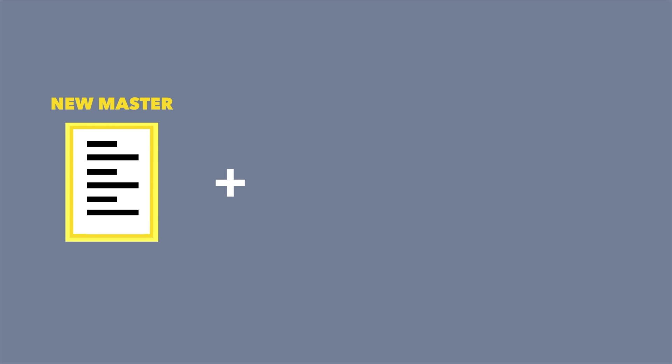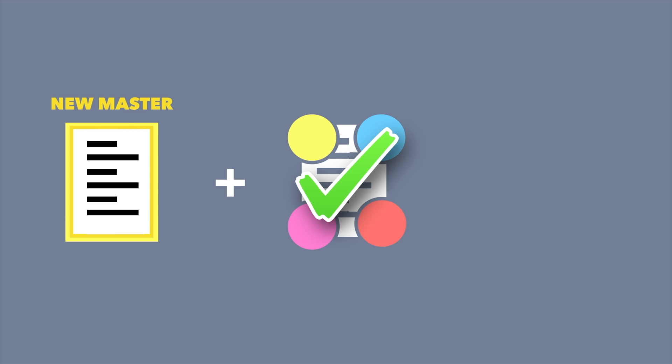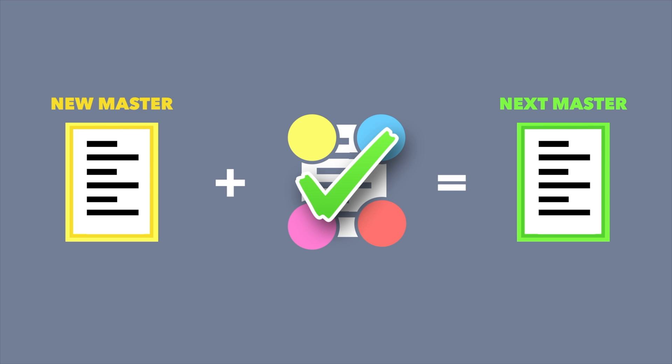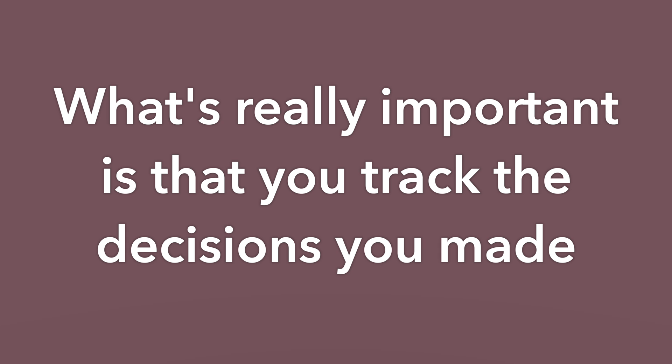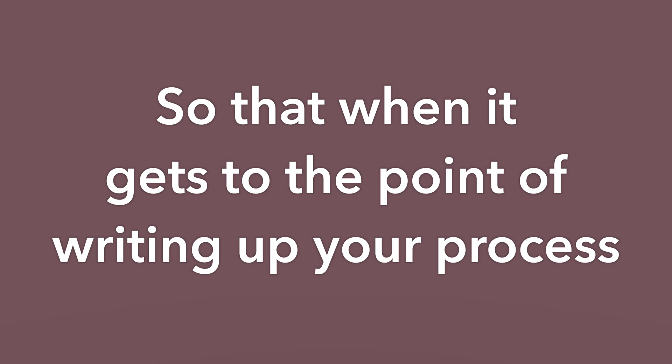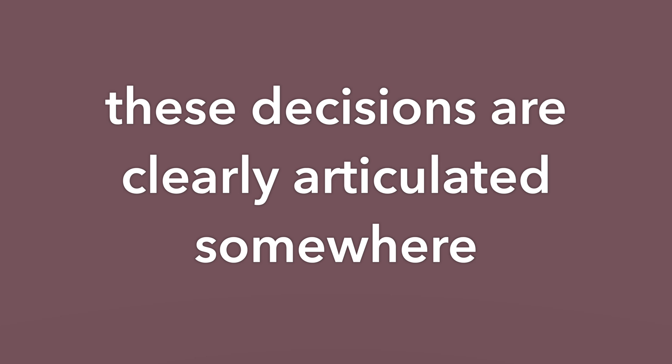Then you can essentially continue analysis. You might choose to divvy up the coding if you're happy with your first intercoder reliability results, or you might choose to do more intercoder reliability — either is fine. The important thing is that you keep track of the decisions you made so that when it comes to writing up your process, those decisions are clearly articulated and it's easy to convince a peer reviewer or client that your coding is reliable and valid.